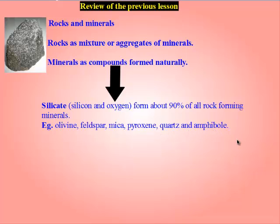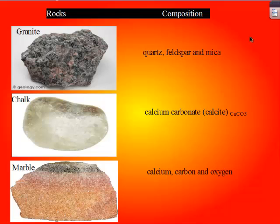These are some examples of silicate minerals, so when you take any rock you will find one or more of them present in it. We also looked at some rocks and their composition. We said granite is formed from quartz, feldspar, and mica. Chalk is formed from calcium carbonate, that is calcite.